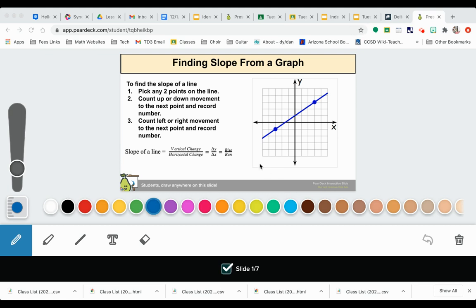We are finding slope from a graph. Our first step says pick any two points on the line. Now I see that there are two points there, but I also want to point out that I see a third point here at this spot, so I'm going to add one to the graph.